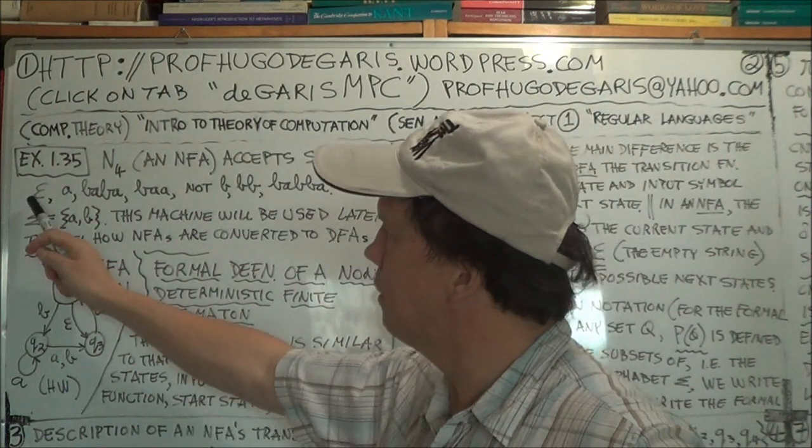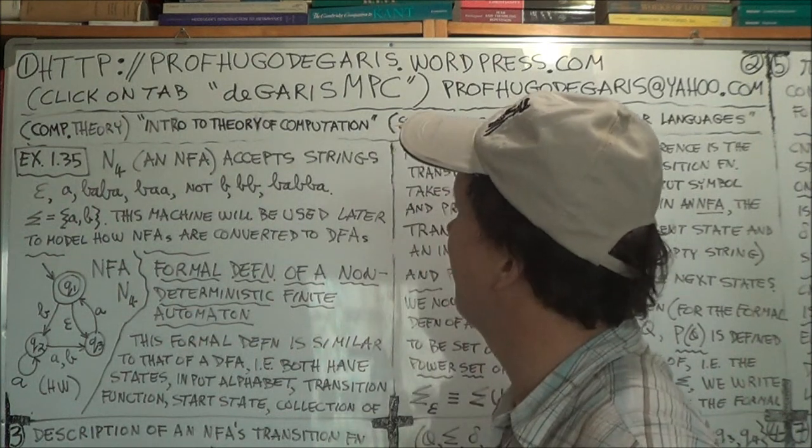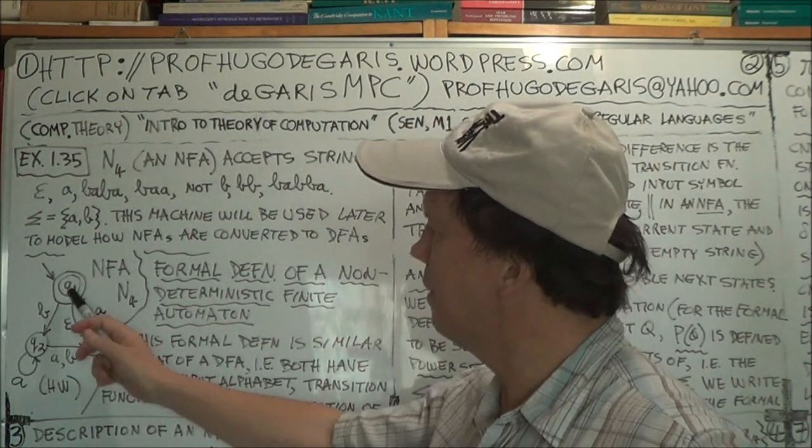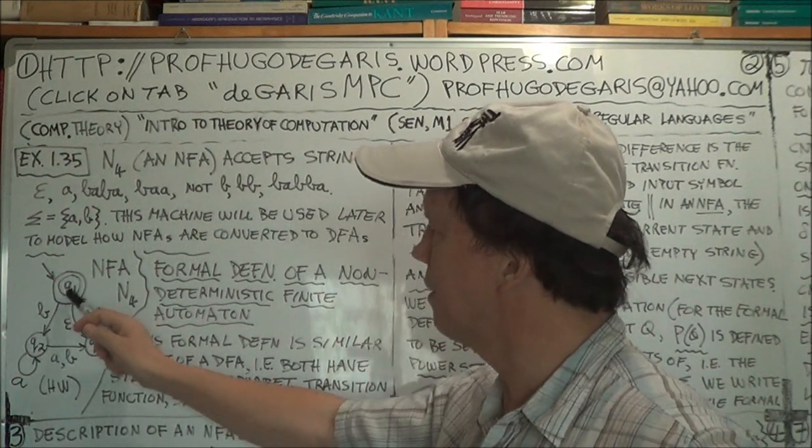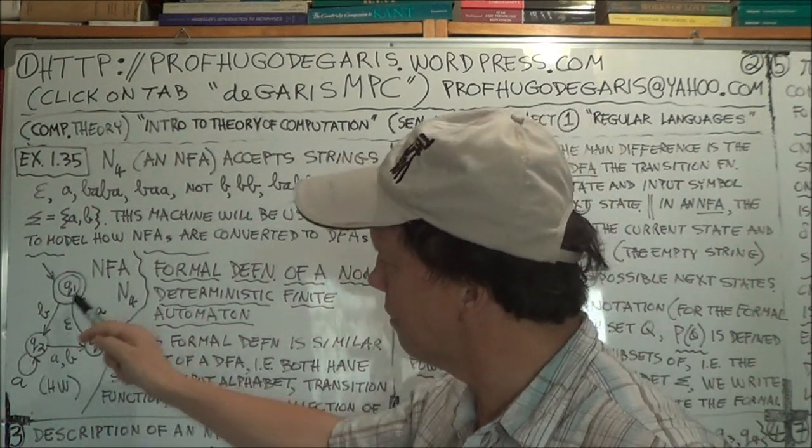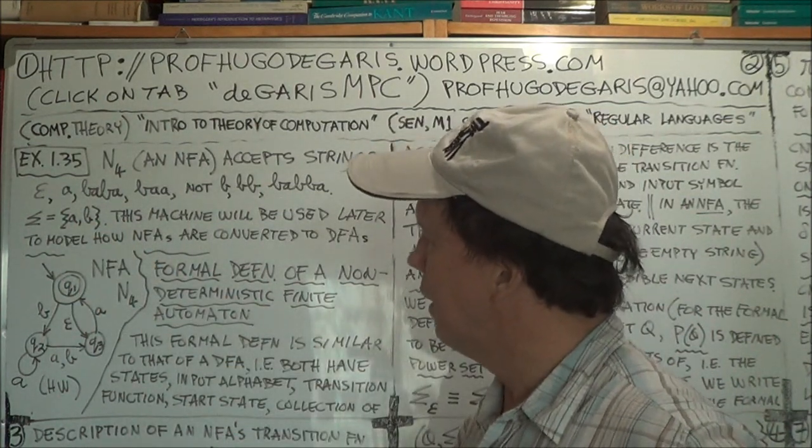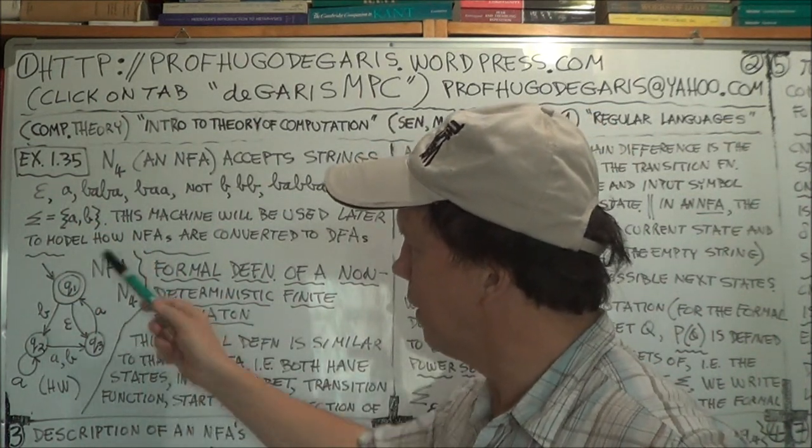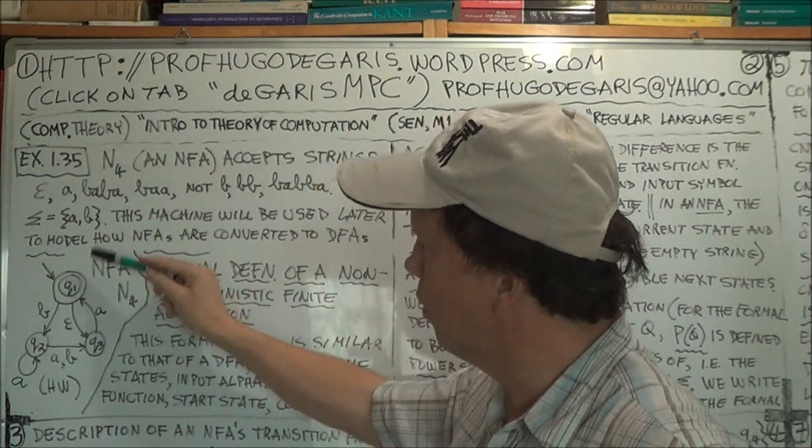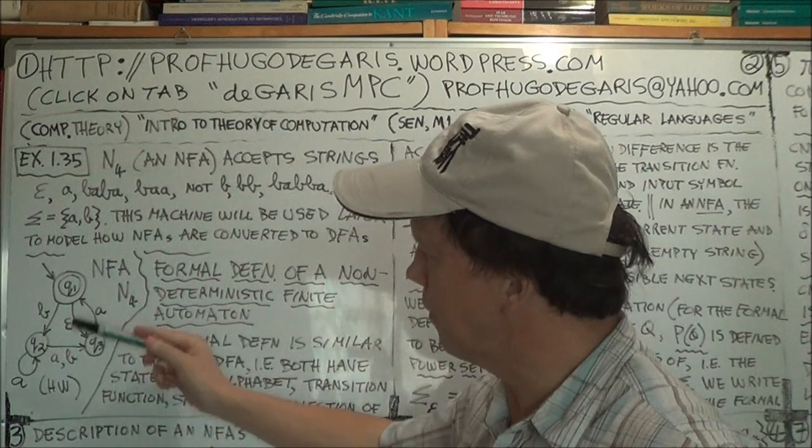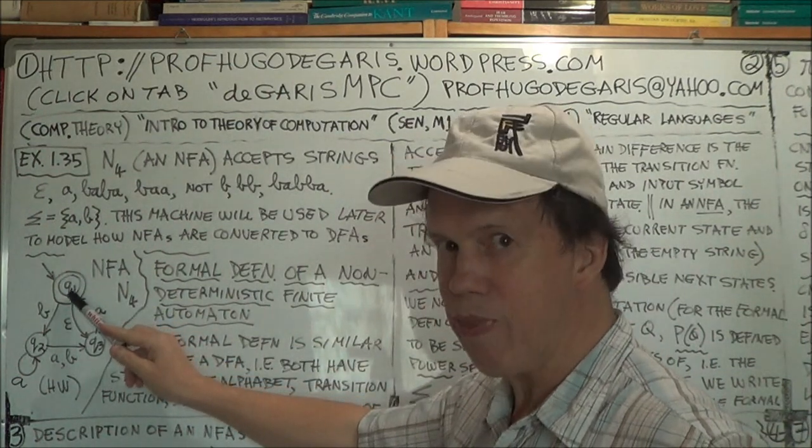Okay, so if the null string goes in, so the no transition, it just stays in Q1. That's an accept state because of the two bars, so that's accepted. Okay, A goes in. Now why is that an accept state? Well look, you can lead to here, right? So you start in Q1.